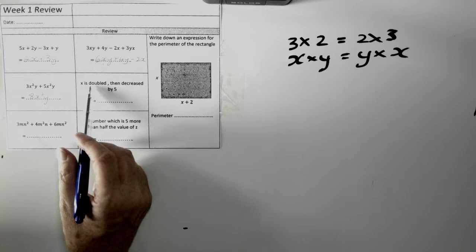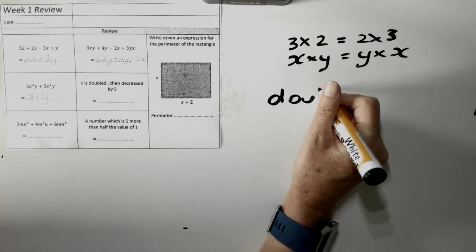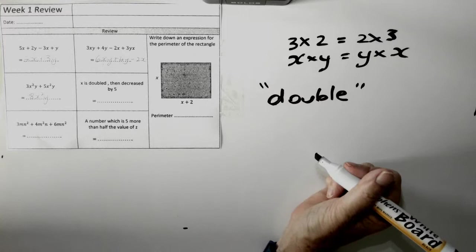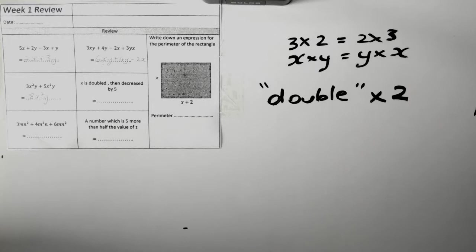X is doubled. Doubled, if you double something. If you double your number of cats, it means that you went from two to four. Okay? So, double means times two.